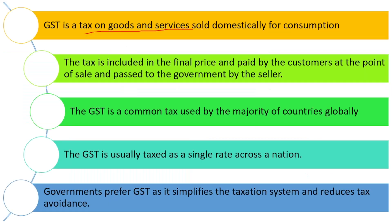GST is a tax on goods and services sold domestically for consumption. It is levied on all those goods and services when domestically available or made for consumption. The tax is included in the final price — whatever the final price of the product is, the tax is levied on that final price and paid by the customers at the point of sale.